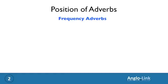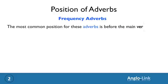Word order, part two. Today we're going to look at the position of adverbs. Let's start with frequency adverbs. The most common position for adverbs of frequency is before the main verb in the 'what' part. Just a brief reminder of the basic sentence structure: who, what, where, when, how and why. So the adverb of frequency goes in the 'what' part, before the main verb.